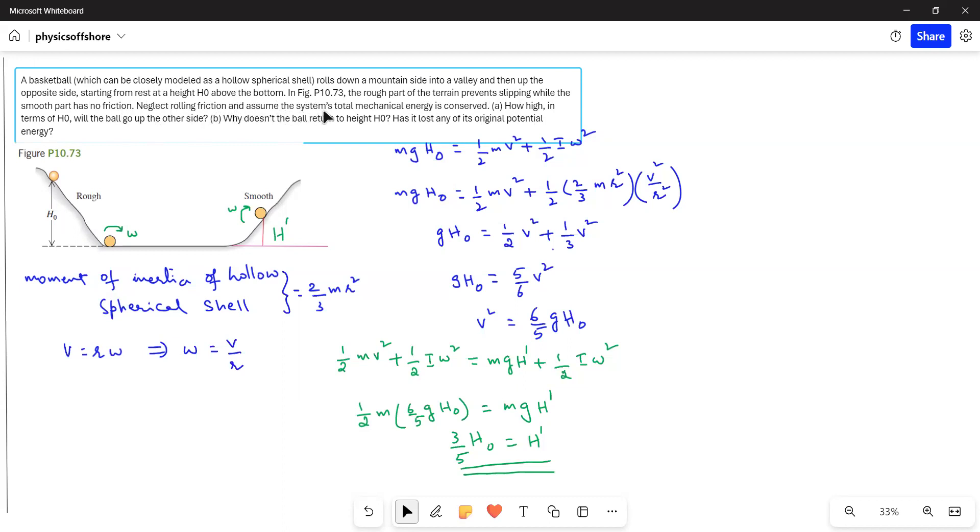Neglecting rolling friction and assuming the system's total mechanical energy is conserved, how high in terms of H0 will the ball go up the other side? Why doesn't the ball return to the height H0? Has it lost any of its original potential energy?